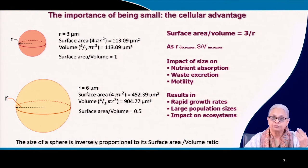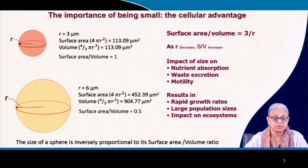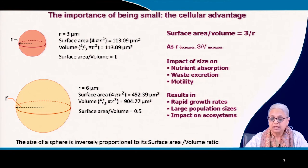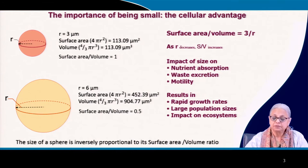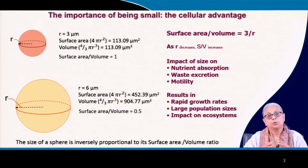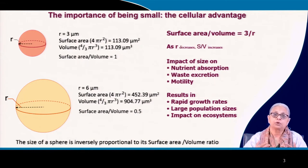We have a comparison here of two different organisms. The radius in the first case is 3 microns and in the second case it is 6 microns. You have the surface area and the volume. In the first case they are equal, and you can do the derivation: 4πr² divided by (4/3)πr³, and the ratio equals 3/r. Surface area divided by volume in the first case is 1 and in the second case the ratio is 0.5.